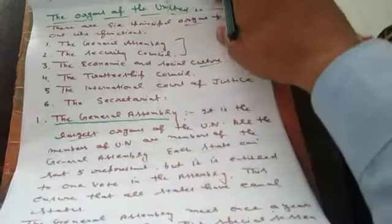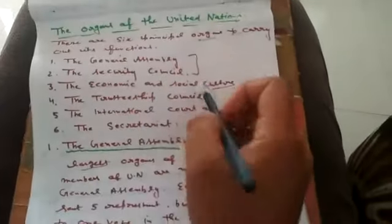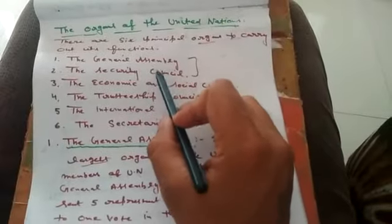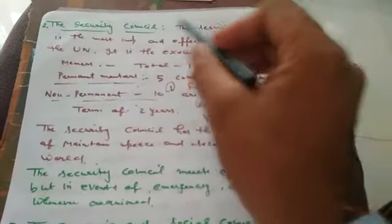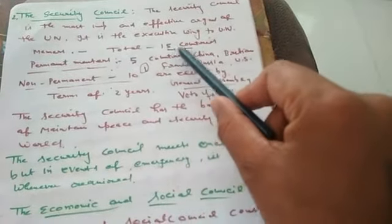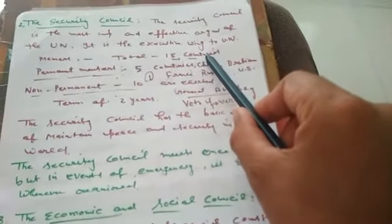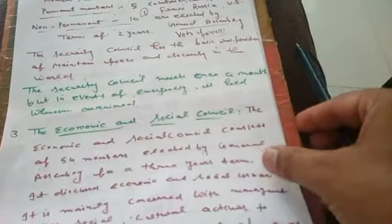United Nations ke baare mein we are continuing our videos. We have also studied the organs of the UN. In the last videos we studied two organs: the General Assembly and the Security Council. The Security Council is the most important organ of the UN. There are 15 member countries — five are permanent members who enjoy veto power, and ten are non-permanent members.